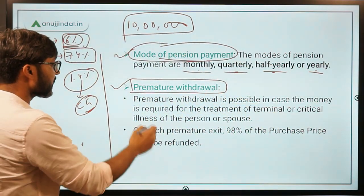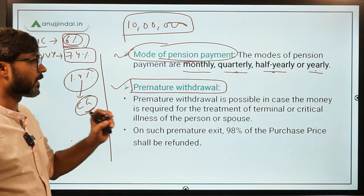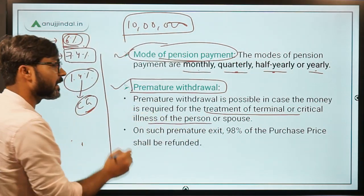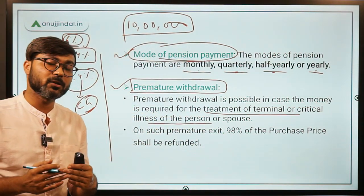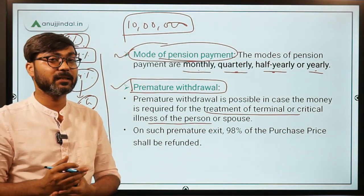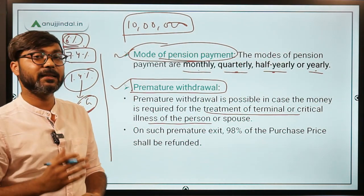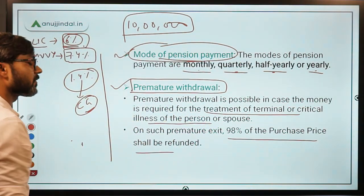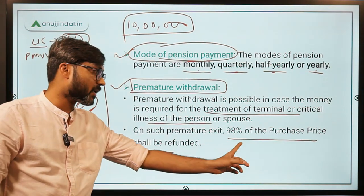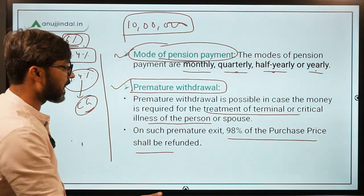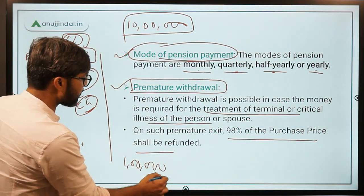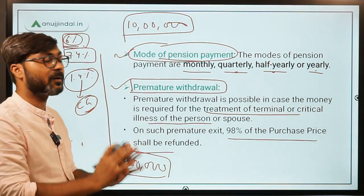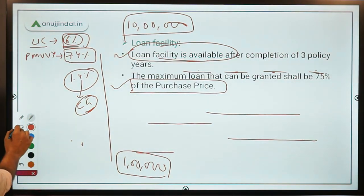Premature withdrawal is possible only in the case of treatment of terminal or critical illness of the person or spouse. If the policyholder or their spouse develops a critical illness, then only premature withdrawal is allowed. In that case, only 90 percent of the purchase price will be refunded — not 100 percent. So if you invested one lakh rupees, you will get back 90,000 rupees. Any pension already received will not be taken back.